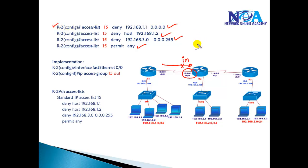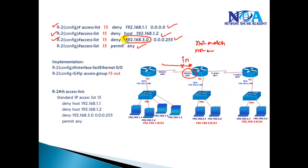If that first statement does not match, only then does it check the second statement. If the second statement also does not match, it checks the third statement. If the third statement matches, it does not check the fourth or fifth statement. So when writing ACLs, it is really important to write them in a proper sequence.